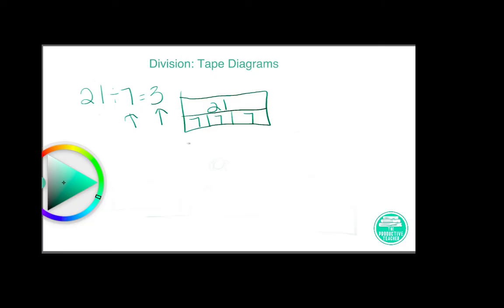I could also draw it the other way. Let me make another tape diagram. So my total is still 21, and now I have to make 7 boxes: 2, 3, 4, 5, 6, 7.